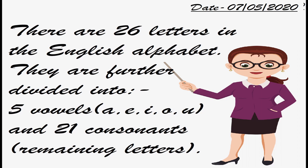Then you will continue: 'They are further divided into.' Ivy ma'am told you that there are 26 letters in the English alphabet — five vowels: A, E, I, O, U — and 21 consonants. So they are divided into five vowels and 21 consonants. In the bracket you will write 'remaining letters'.